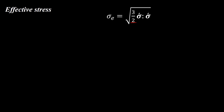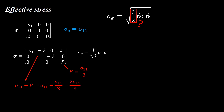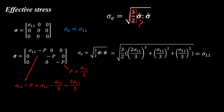If we use principal stresses in the plane stress condition, the shear stress is zero. To understand why the coefficient 3/2 is used in the definition of effective stress, consider the one-dimensional stress condition — the effective stress should equal the applied normal stress. Calculating the deviatoric stress tensor for this case, the hydrostatic stress is one-third of sigma_11. After computing the effective stress, we see that only through the coefficient 3/2 does the effective stress equal sigma_11.